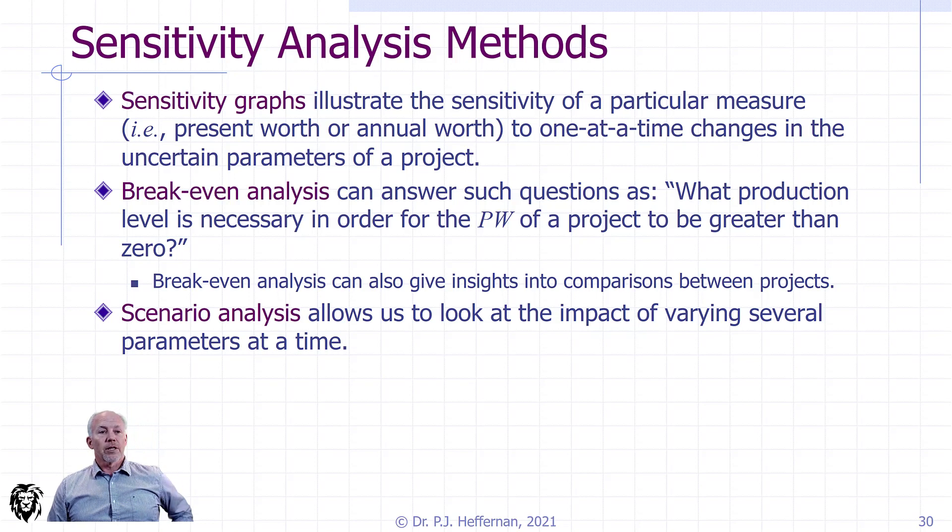The tool that we're going to use for this mostly is the sensitivity graph, which illustrates the sensitivity of a particular specific measure, i.e. present worth or annual worth, to one at a time changes in any uncertain parameter within the project. But it only allows for adjusting one parameter at a time. We can overlay graphs so we can see multiple parameters and how sensitive they are at the same time, but we're not comparing them one to the other or any interdependencies that may also be affected.